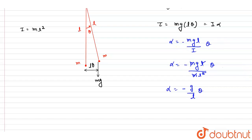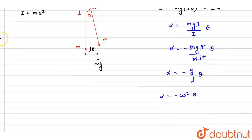So if you compare this with the general equation of SHM, if you see, we got this omega is equals to under root g by l.